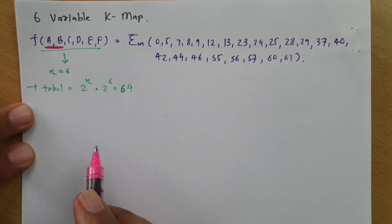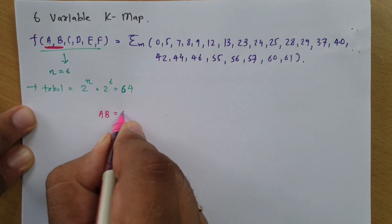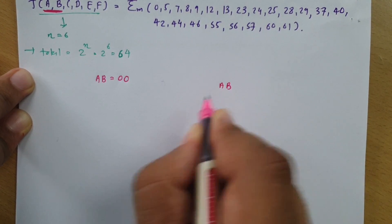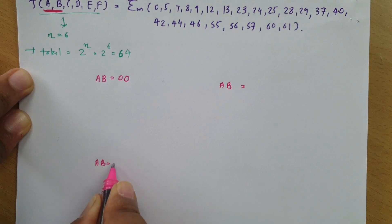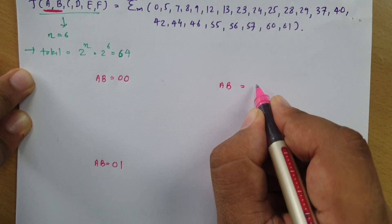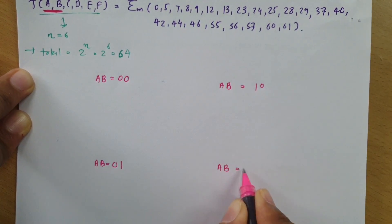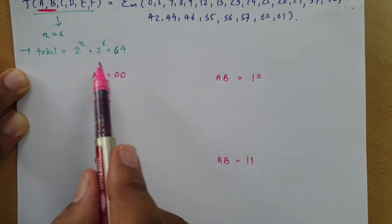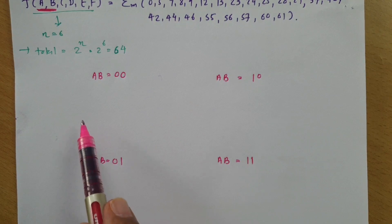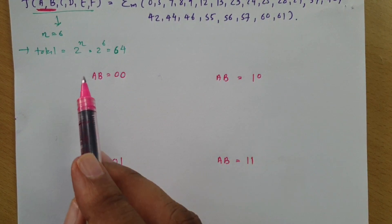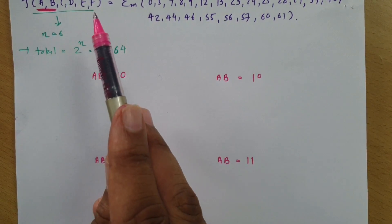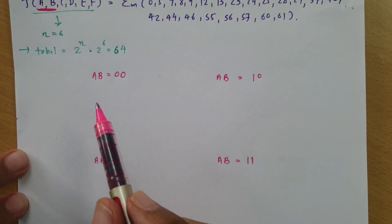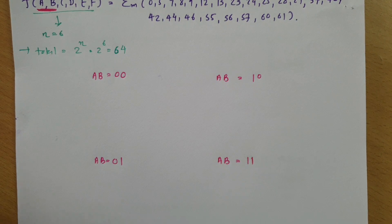For example, if we have AB as 00, AB as 10, and AB as 11, then we can have a bisection of this function into 16-cell groups with 4 different groups. So here, what we will be doing is bisecting ABCDEF based on a 16-cell group, where the CDEF structure will be as per a 16-cell K-map.